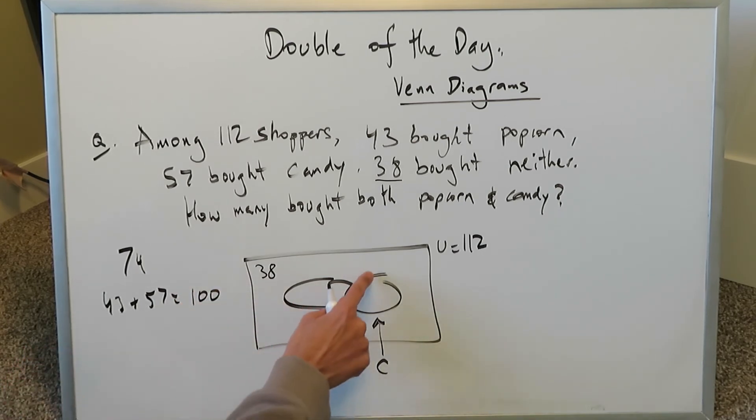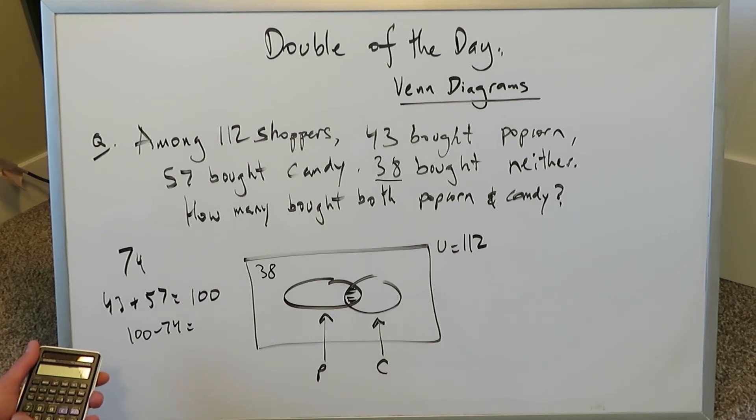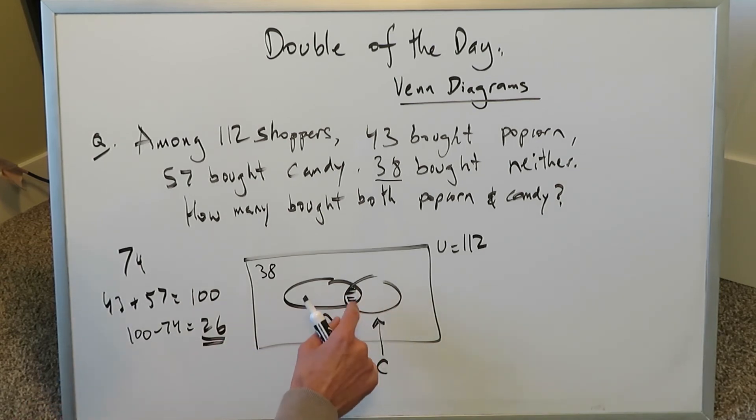That there's some double counting going on here, because out of these 100, some bought both. If you do 100 minus 74, you get 26. That 26 represents the people who double purchased, which means they bought both popcorn and candy. This number here can be 26. Let's put this number over here. Now let's break everything down.